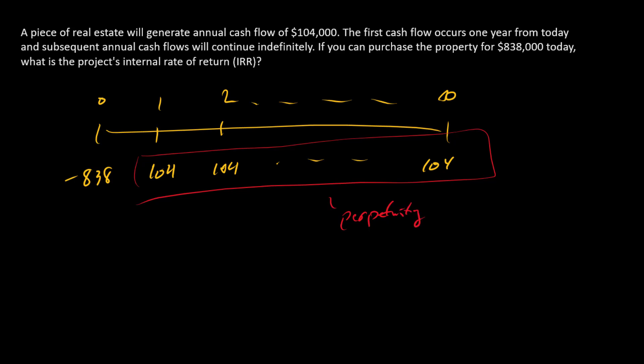So since this is a perpetuity, we know that NPV is equal to minus 838—that's the present value of the time zero cash flow—plus the present value of all of the following cash flows. So perpetuity is just the cash flow divided by the discount rate. And so when we set that equal to zero, we have this. And solving for R is very straightforward. That gives us an R or an IRR of 0.1278, or 12.78%.